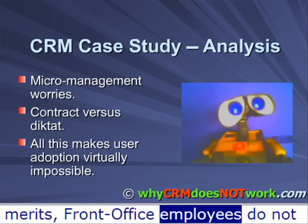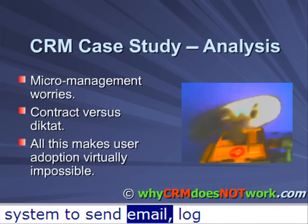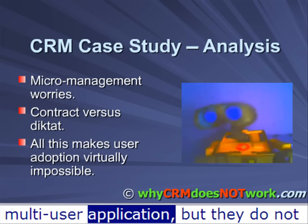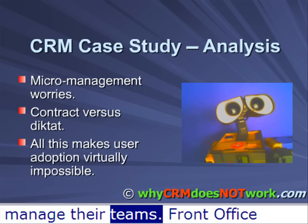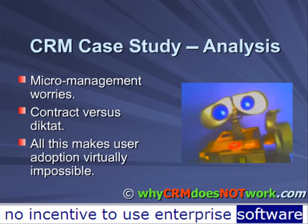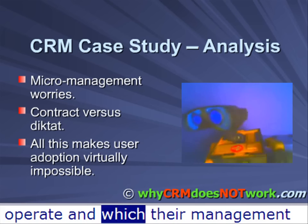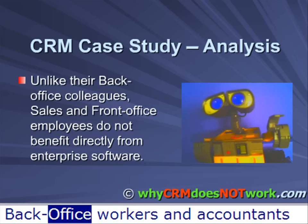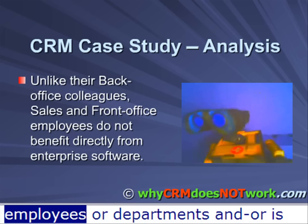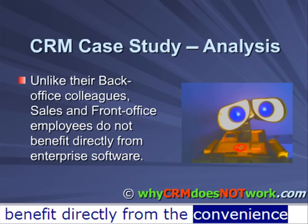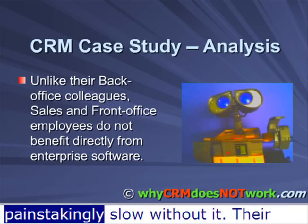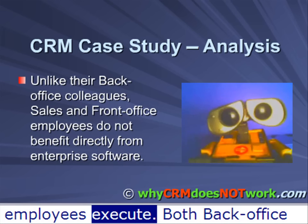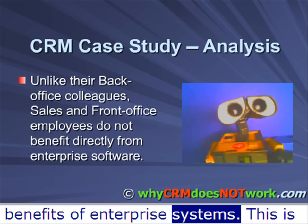Whatever the system and whatever its merits, front-office employees do not need it. They do not need a multi-user system to send email, log appointments, and track opportunities or tickets — they can do this with paper or single-user applications. Supervisors can benefit from a multi-user application, but they do not need a multi-department system to manage their teams. Front-office employees and their supervisors have no incentive to use enterprise software, as it is at odds with the value and rewards framework in which they operate. Unlike their back-office colleagues, sales and front-office employees do not benefit directly from enterprise software. Back-office workers and accountants process structured data generated by other employees or departments, and they benefit directly from the convenience and reliability delivered by enterprise software. Their work would be painstakingly slow without it. Both back-office workers and managers share the benefits of enterprise systems. This is not the case with CRM.